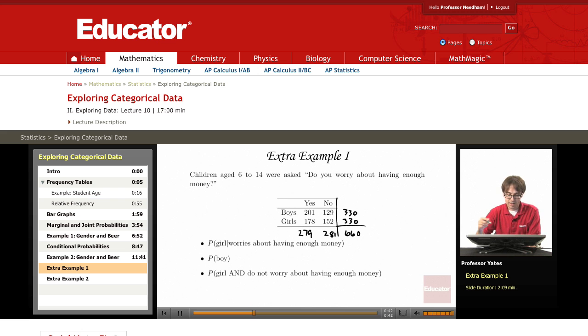The first probability: what's the probability that the student is a girl given that they do worry about having enough money? So in that situation, we're only concerned with the people who are worried about having enough money.